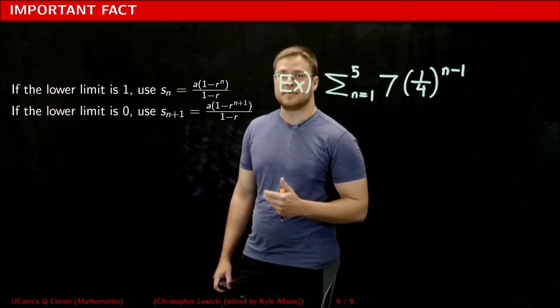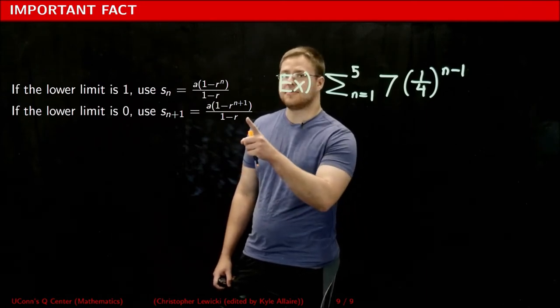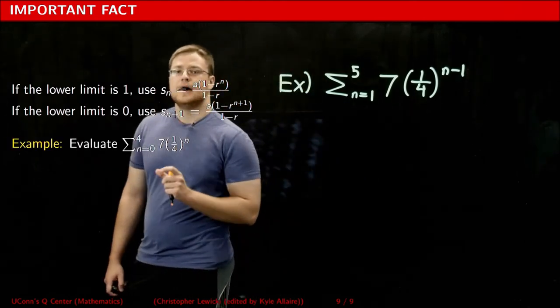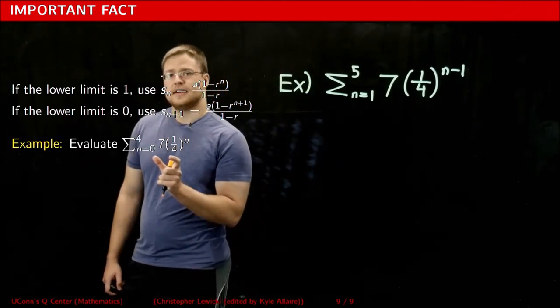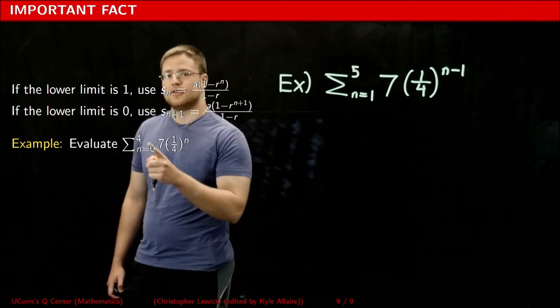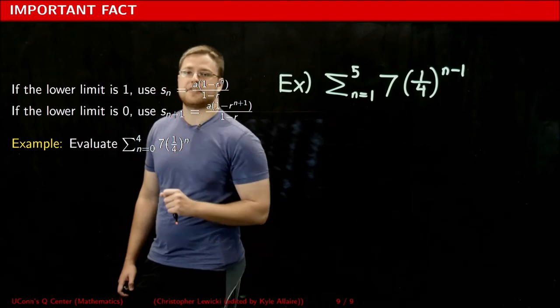If the lower limit is zero, notice that the formula changes to be this, and I'm going to explain why. This series here is equivalent to this series. Notice the change in the lower bound, the upper bound, and in the exponent.